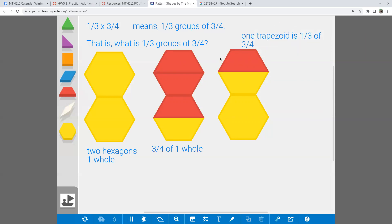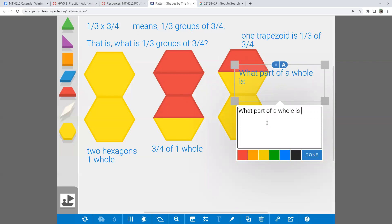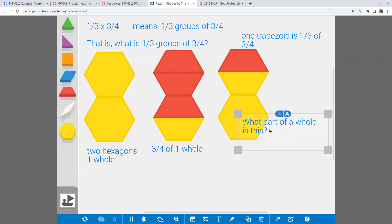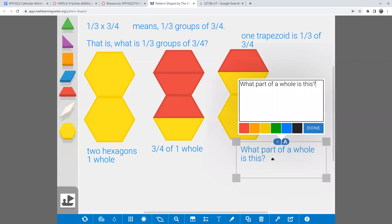And finally, to answer the question, one-third times three-fourths, I just need to say, hey, what part of a whole is this? I can pretty clearly see that that right there is one-fourth of the whole. And so in the end, that tells me that one-third times three-fourths has to be one-fourth. And I'm missing something. How about an equal sign?